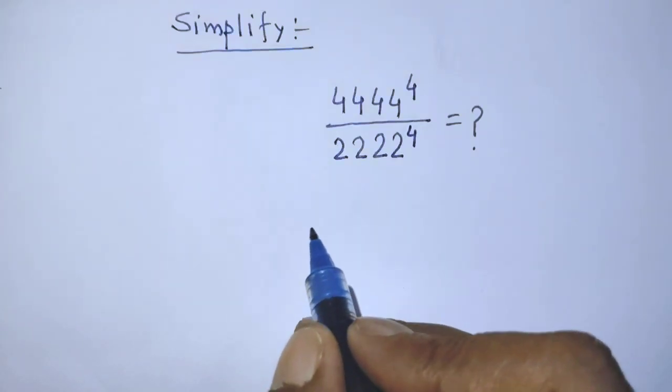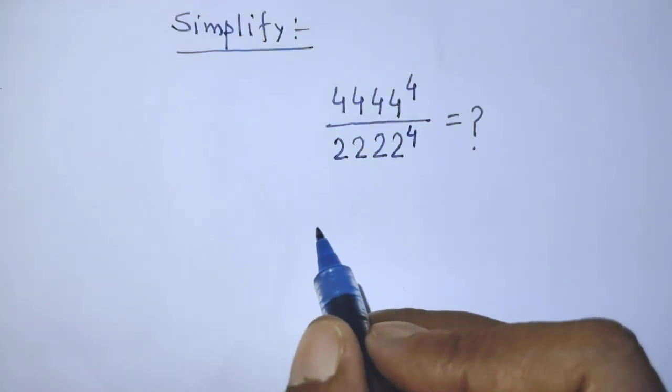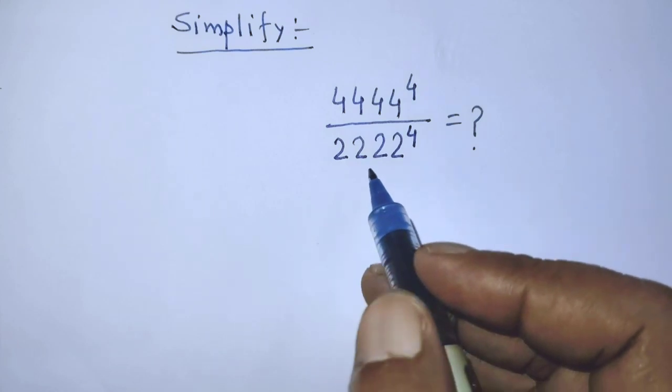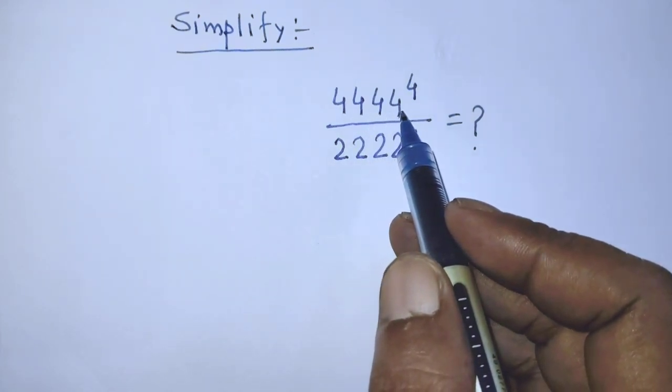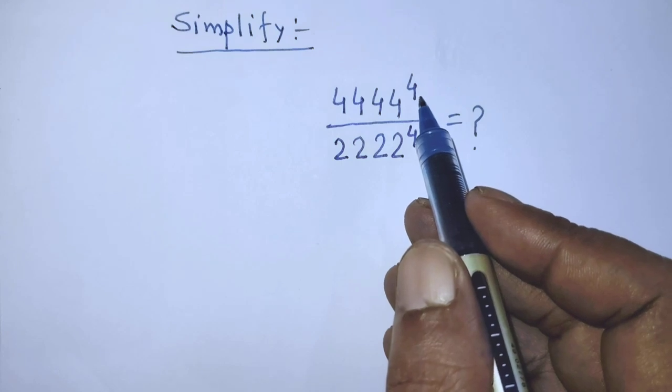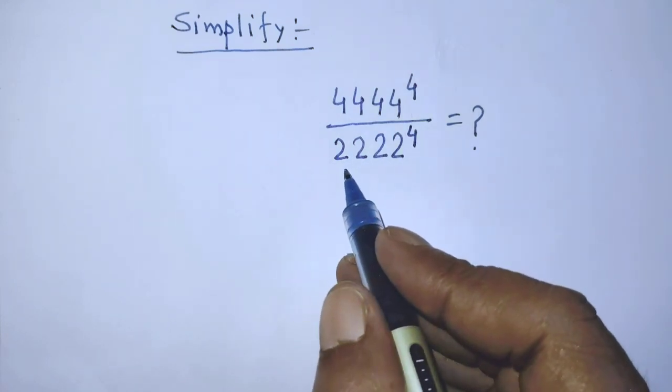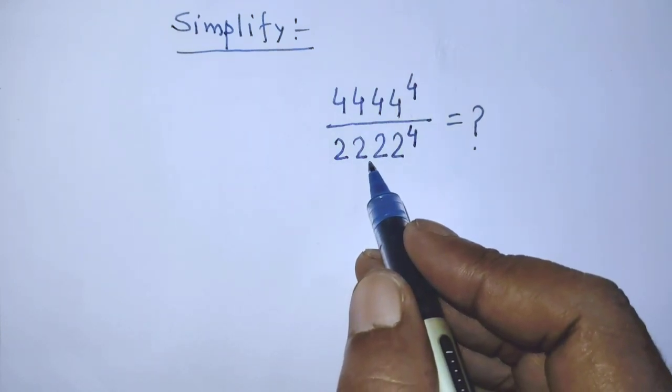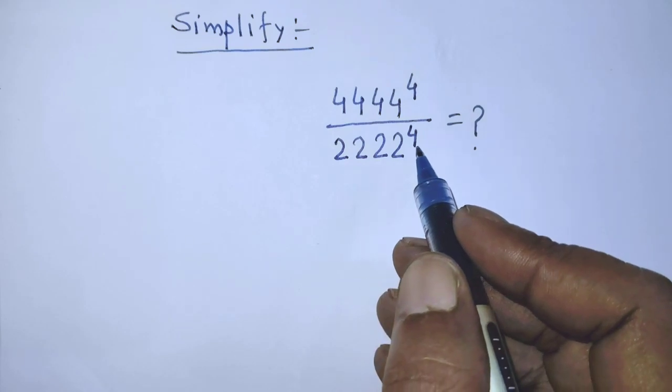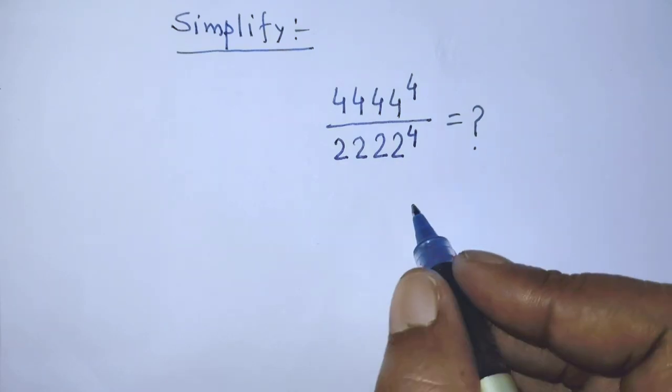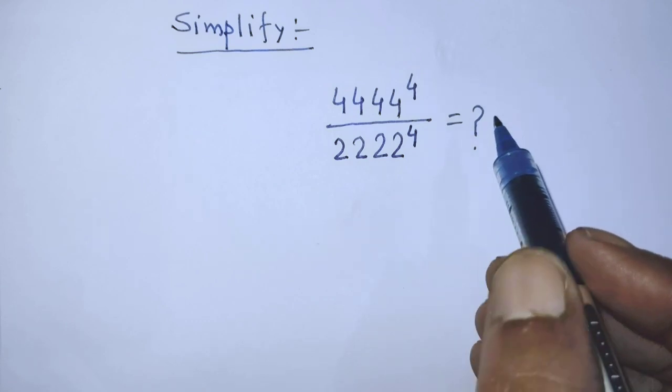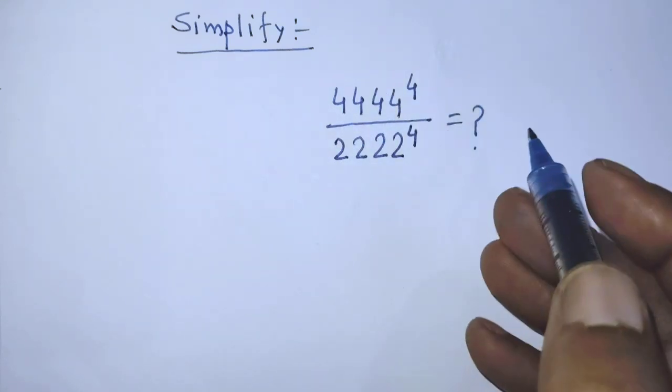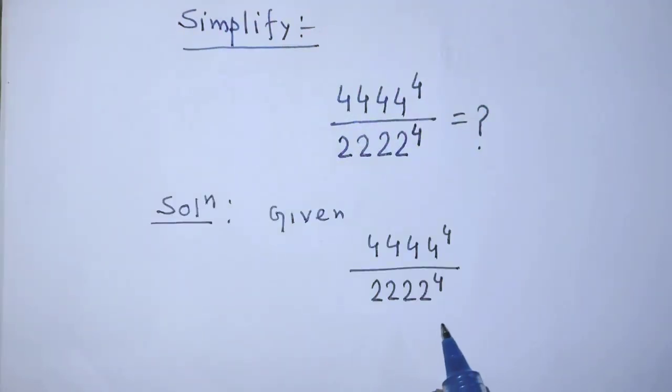Hello guys, you are welcome to solve this math problem which is 4444 to the power 4 over 2222 to the power 4. Today I am telling you how to simplify this algebraic expression.